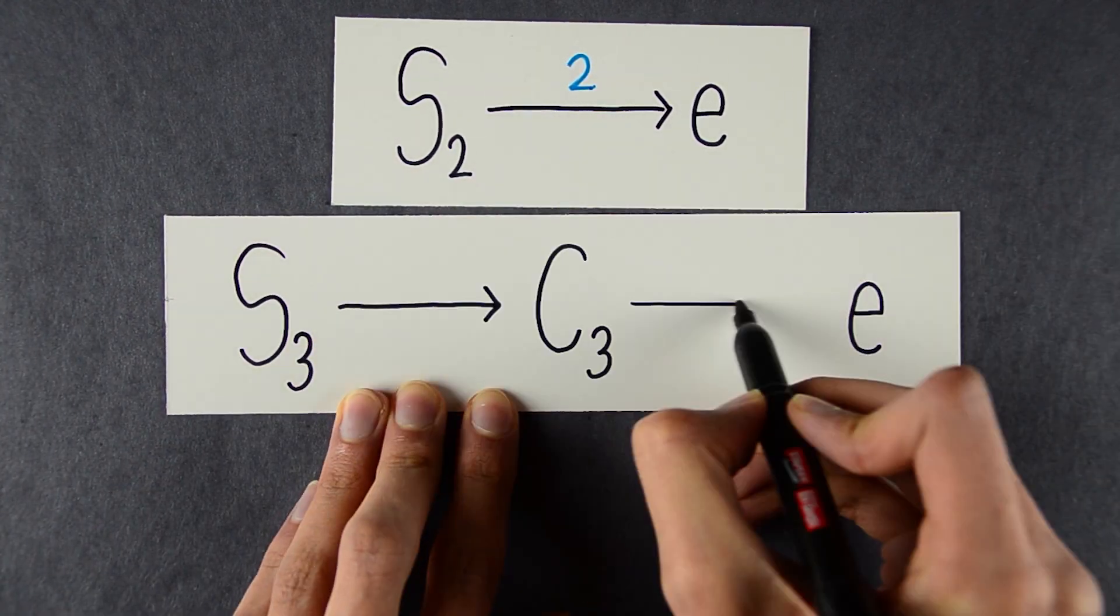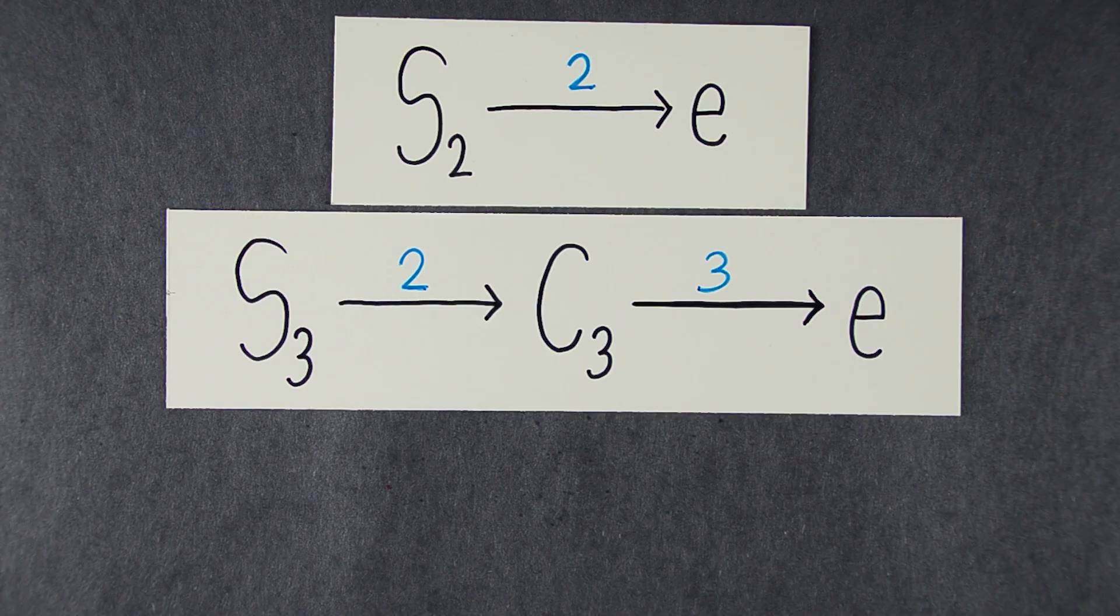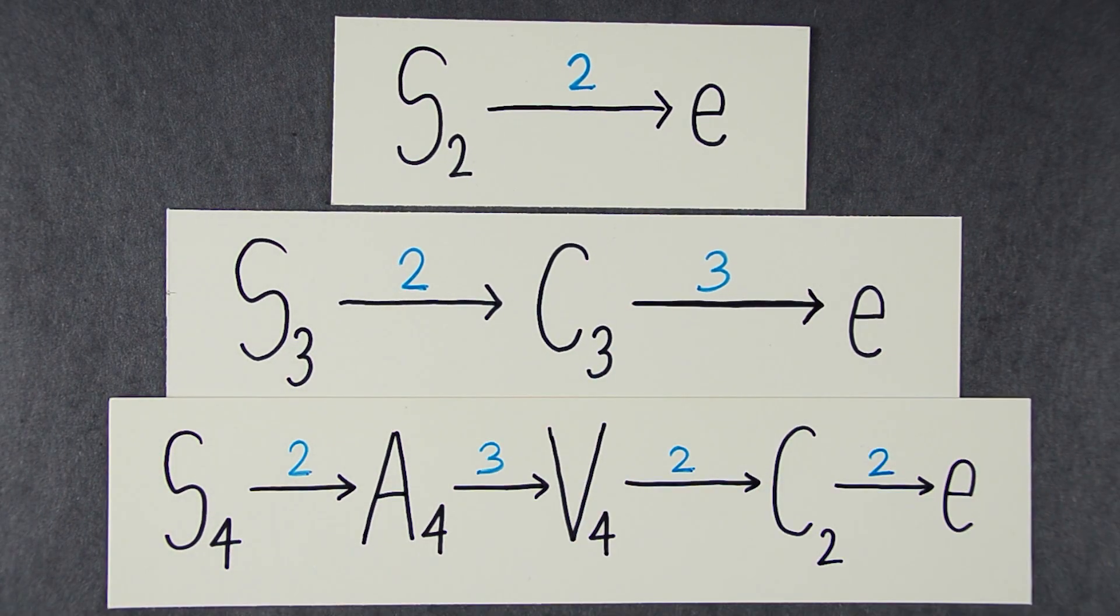For n equals 3, here's a chain of subgroups. These numbers are all prime, so the group is solvable. That's why there's a cubic formula. For n equals 4, the numbers are all prime, so the group is solvable. That's why there's a quartic formula.